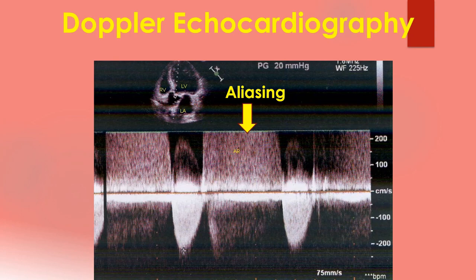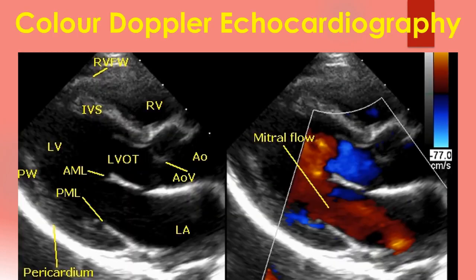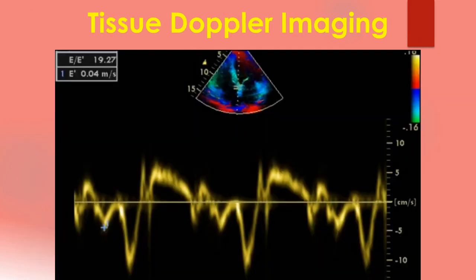Displaying Doppler flow information on a two-dimensional image is known as colour flow mapping or colour Doppler imaging. Here one image is two-dimensional and another has colour flow information in a sector. Blue colour represents flow away from the transducer and red represents flow towards the transducer. It has nothing to do with the colour of the blood like oxygenated or deoxygenated. While conventional Doppler images the velocity of blood, the same principle applied to the myocardium is known as tissue Doppler imaging. Tissue Doppler information overlaid on a two-dimensional image is known as colour kinesis, which can be seen in the inset at the top of this image.